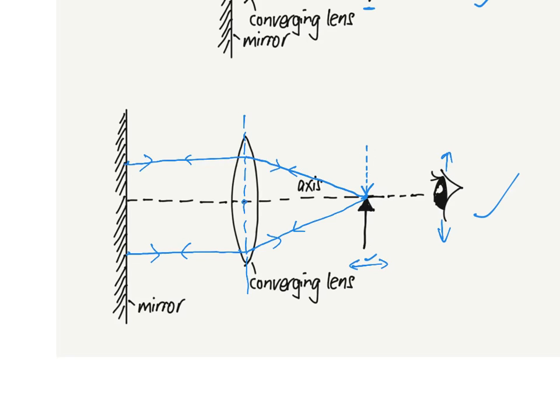From theory you know that if I have the lens over here, a parallel beam of light after passing through the lens will converge to this point. This is the focal point, and obviously here will be the focal length.